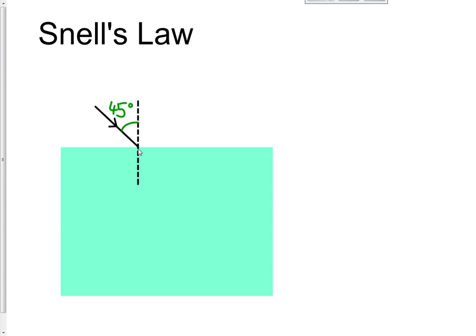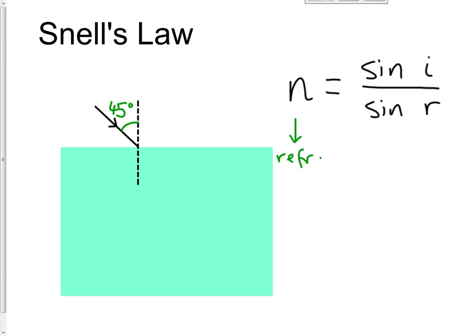In the textbook you will find this formula, where n is the refractive index, i is the angle of incidence, and r is the angle of refraction. This formula is annoying because it only works when you are going from air into another substance with refractive index n. It's quite a limiting formula — it only works when you're going from air or a vacuum into another substance. If you're going from air into another substance, this formula is fine.